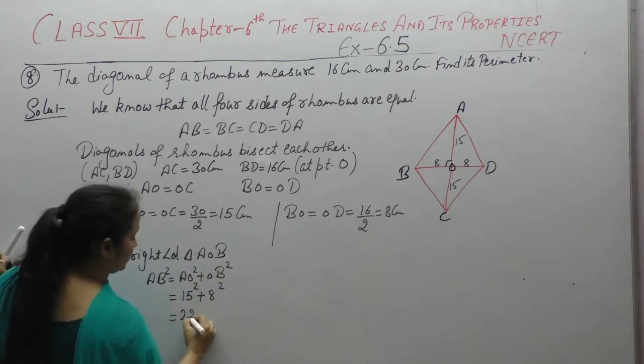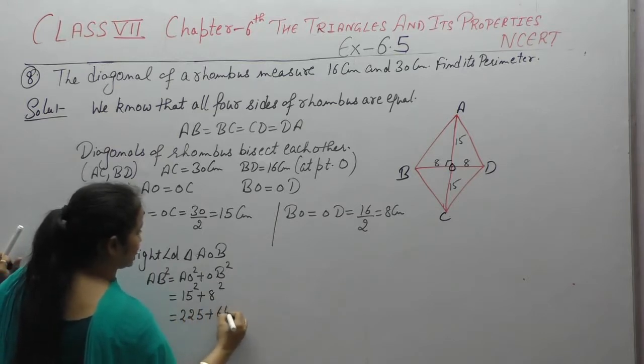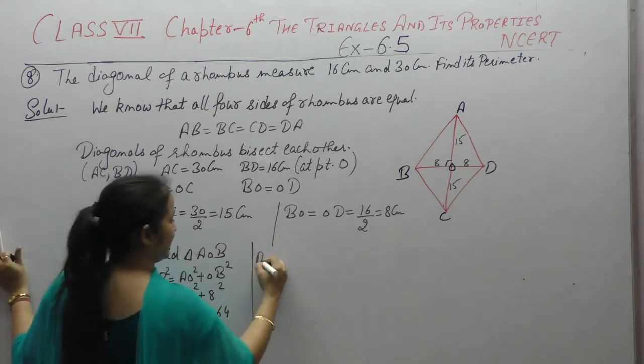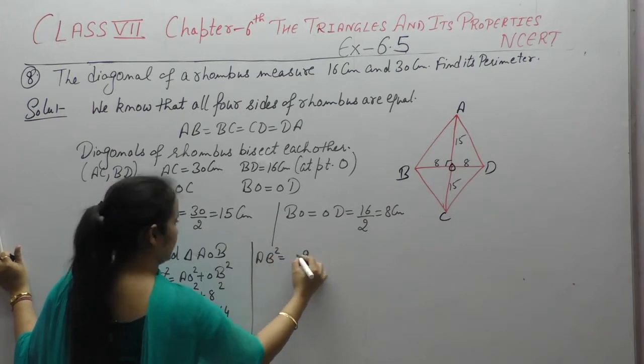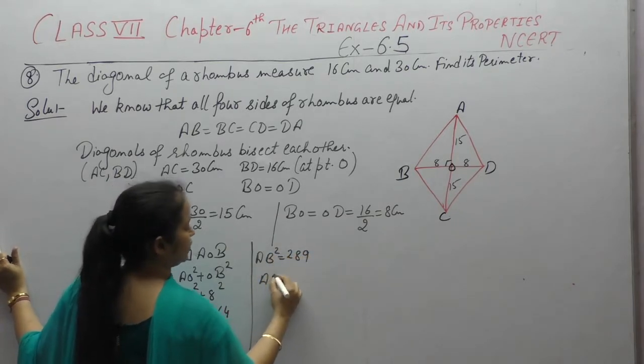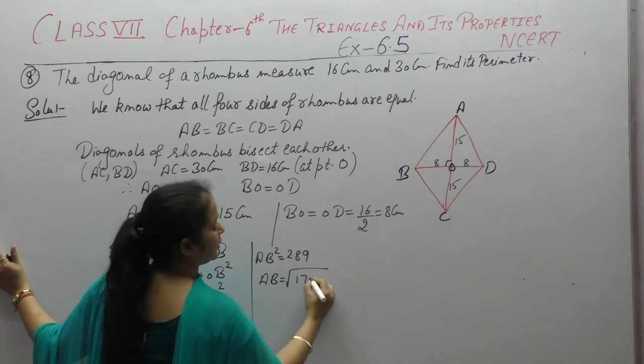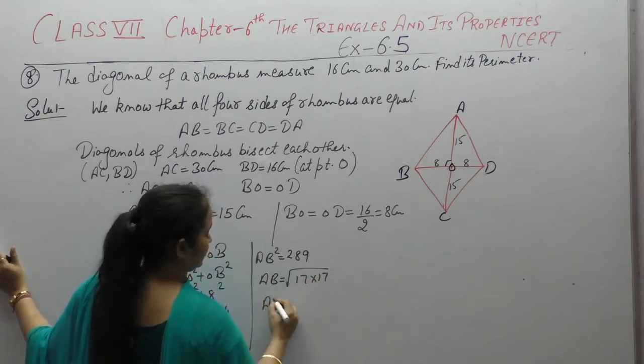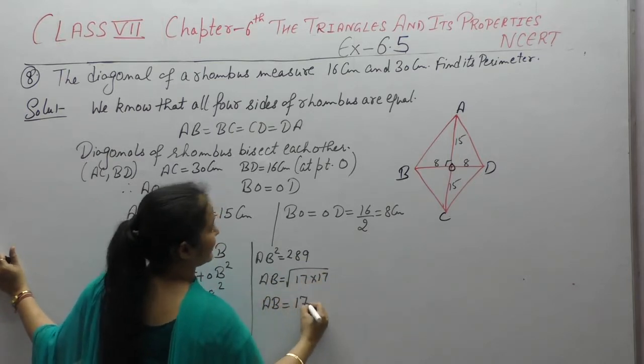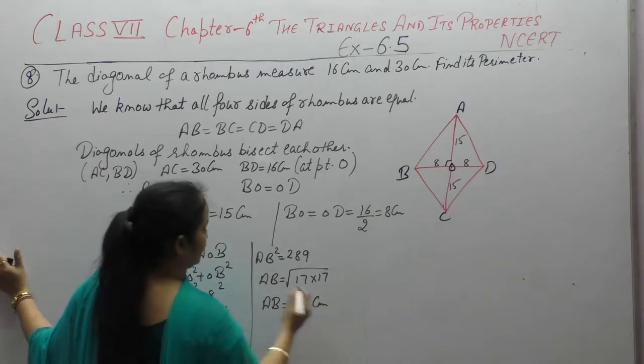15 square is 225, 8 square is 64. So AB square is equal to 289. 289 square root is 17. So AB is 17, this is in centimeters.